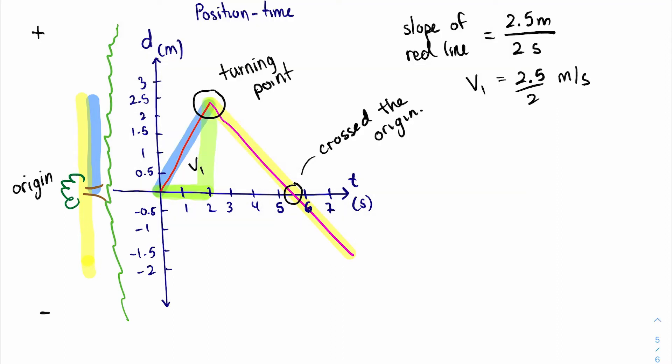And we can call the slope of the red line v1. So v1, and we can calculate the slope of the pink line. To make it more clear I'm going to use pink as well for the highlighter. So notice that in two seconds of time, for the same time comparison...